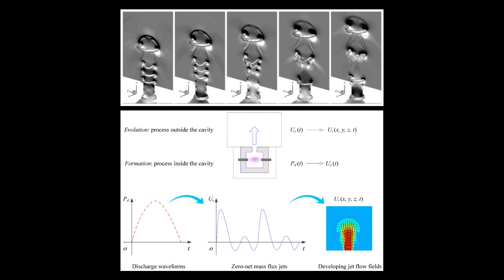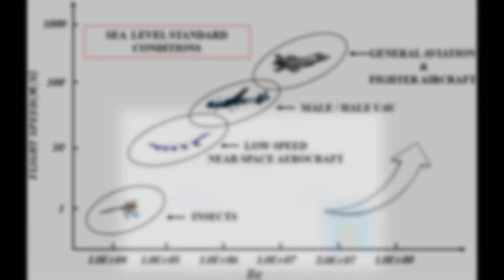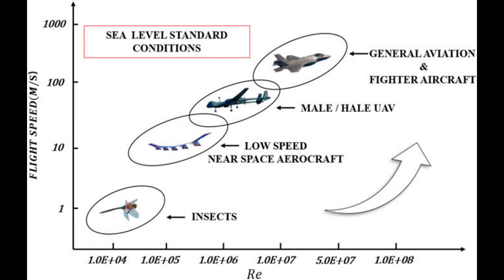Plasma spark jet actuators operate with a high frequency of greater than 5 kHz, making them tailored for high Reynolds number and high-speed flow control for aerospace engineering.